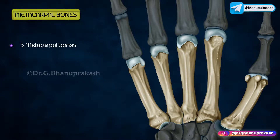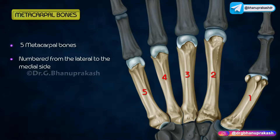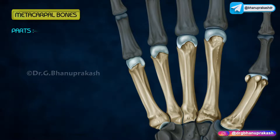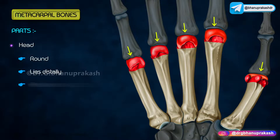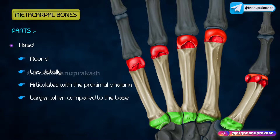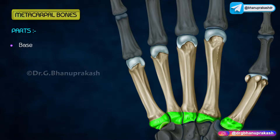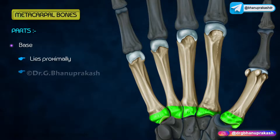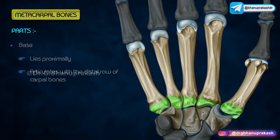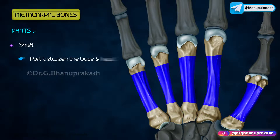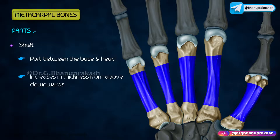Metacarpal bones: There are five metacarpal bones. They are numbered from the lateral to the medial side and are all short bones. Parts of the metacarpal bones are: Head, which is rounded and lies distally, articulates with the proximal phalanx, and is larger compared to the base, forming the prominence of the knuckles. Base lies proximally and articulates with the distal row of carpal bones. Shaft is the part between the base and the head, and increases in thickness from above downwards.